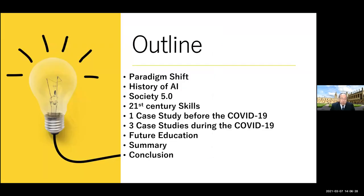This is my outline. My presentation is divided into nine sections: first, paradigm shift; second, history of AI, and Society 5.0 and 21st century skills; and a first case study before COVID-19 using an AI speaker; and three case studies during COVID-19, and future education, summary, and conclusion.